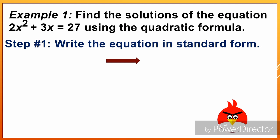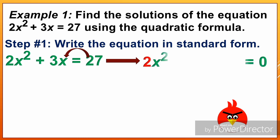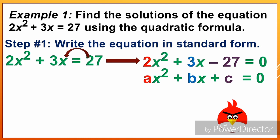Step number 1: Write the equation in standard form. Our equation is 2x squared plus 3x equals 27. To rewrite it in standard form, we equate to 0 by transposing 27 to the other side — positive 27 becomes negative 27 — giving us 2x squared plus 3x minus 27 equals 0. This is now in standard form.